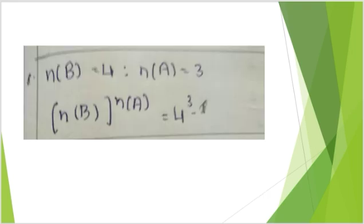Next, passage type: if A = {1, 2, 3} and B = {1, 2, 3, 4}, then the number of positive functions from A to B is — using the formula n(B)^n(A), where n(B) = 4 and n(A) = 3, so 4³. The option is D.